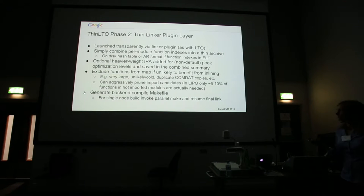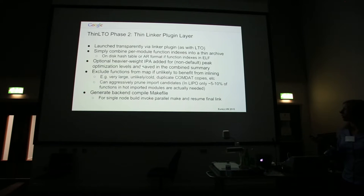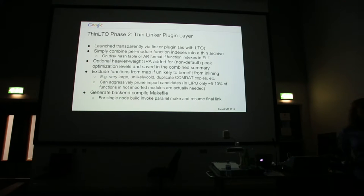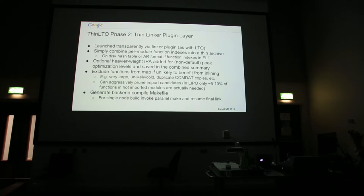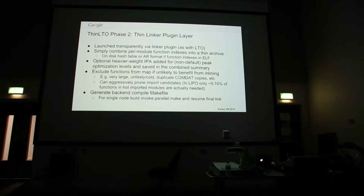Comdats — we found for some of our large applications that like 15 percent of the functions are actually comdats. You can eliminate all the copies and just have one copy of a comdat in there. The last thing after generating this combined map is that you generate a backend compile makefile, and for a single-node build, you can simply launch the parallel make and then resume the final link.